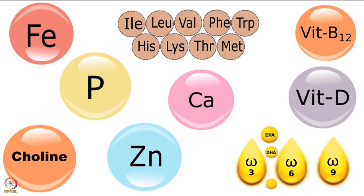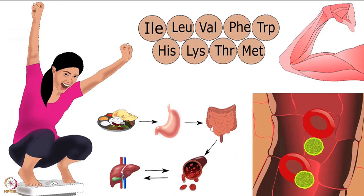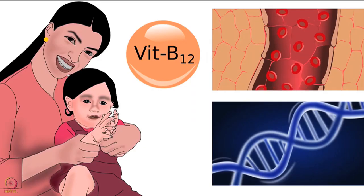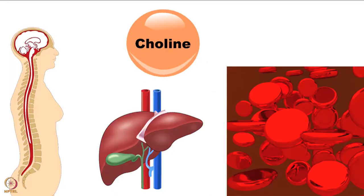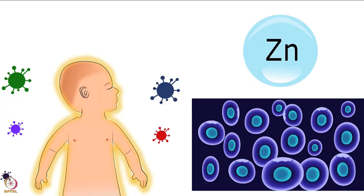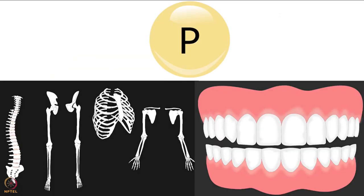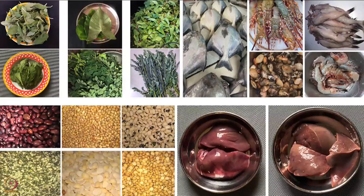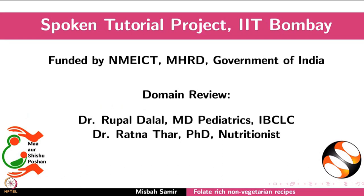All these recipes are rich in other nutrients as well — for example, protein, iron, vitamin B12, choline, and omega-3 fatty acids. They also contain zinc, phosphorus, vitamin D, and calcium. Please include folate-rich food in your diet for good health. This brings us to the end of the tutorial. Thanks for joining.